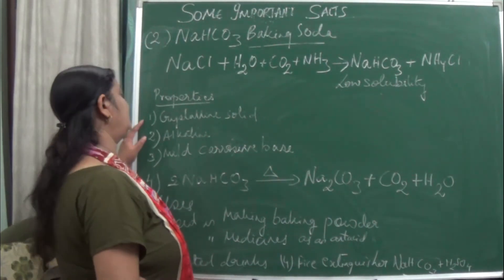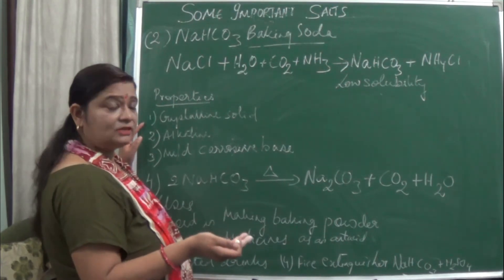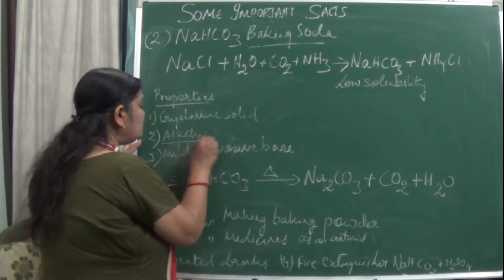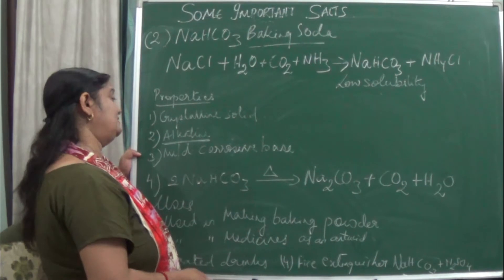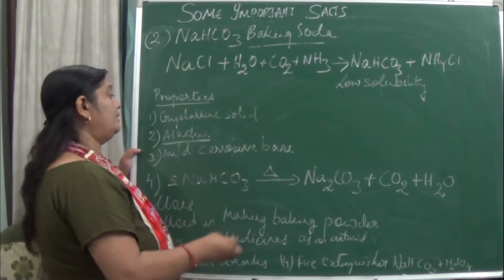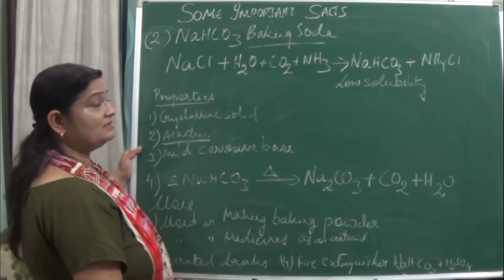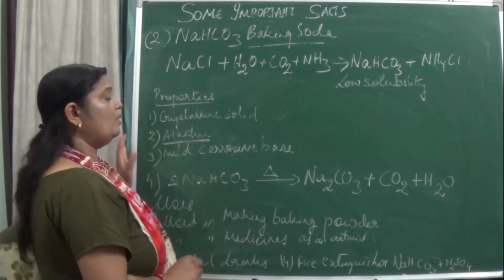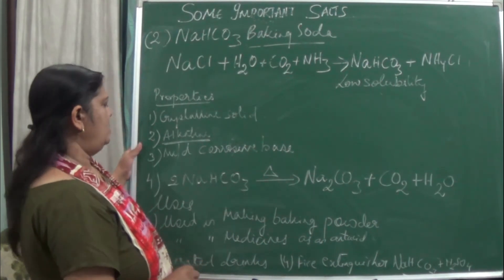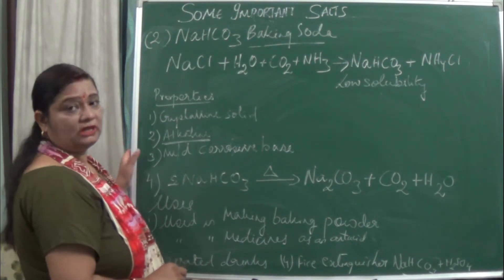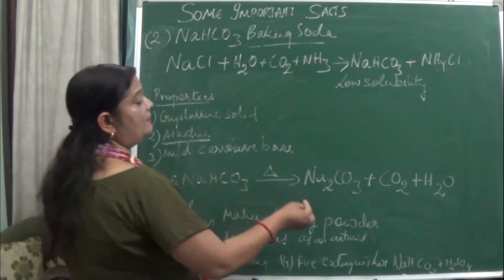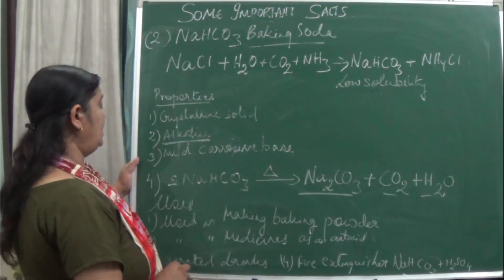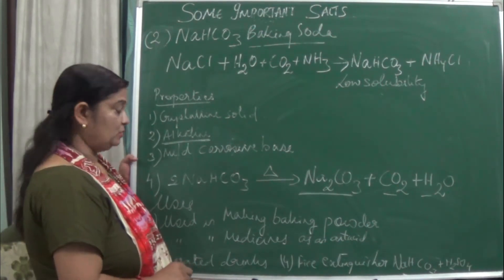The properties of sodium hydrogen carbonate: it is a crystalline solid. It is alkaline in nature, and due to this it is used as an antacid to balance and neutralize acidity. It is a mildly corrosive base — basic but not strongly so, so not very corrosive. When sodium hydrogen carbonate is heated, carbon dioxide and water are released out, and you are left with sodium carbonate (Na2CO3).